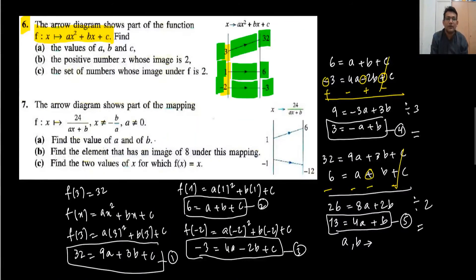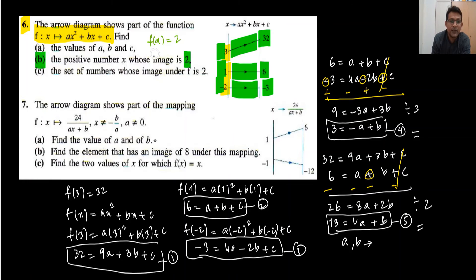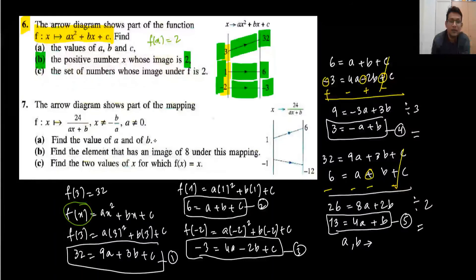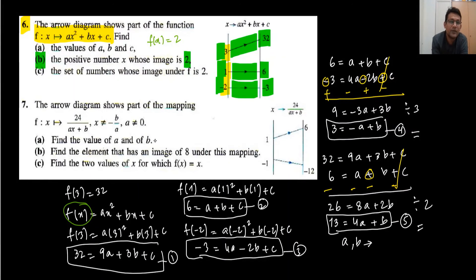Part b: find the positive number x whose image is 2. The image is 2 means f(x) = 2. So write 2 = ax squared + bx + c using the values of a, b, c found earlier, and solve for x. The set of numbers whose image under f is 2 — you put the value 2 in and get the answer. The main part was finding the values of a, b, and c.